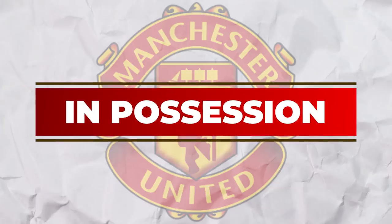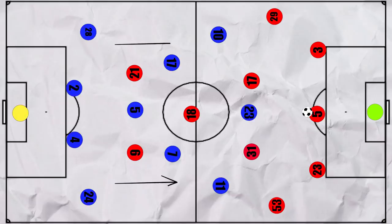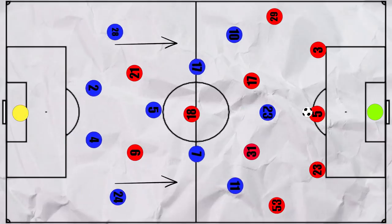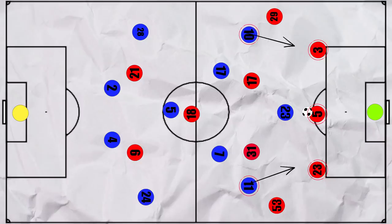Now let's look at how United looked to attack. United also looked to play out from the back and Chelsea also looked to press. To deal with three centre backs, Chelsea had to bring their wingers narrow on the press.